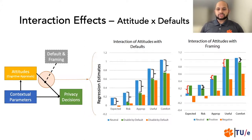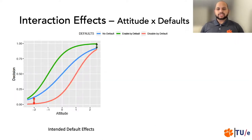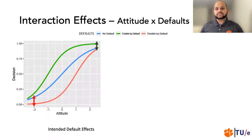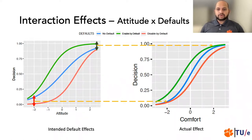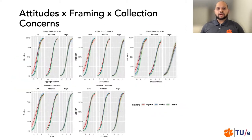This goes on to show that in certain cases, the framing can even reverse the effect of attitudes. Looking at logistic regression plots: ideally, for an attitude, what should happen is that the disabled default should be more effective compared to no default in presence of negative attitudes — that is, the negative default should support people to disable a scenario when their attitude towards that scenario is negative, and vice versa. However, what our data shows is that this is reversed. In case of comfort, the disabled default has almost similar effect as no defaults for participants with negative attitudes towards the scenarios, whereas the enabled default pushes people to make an enable decision even when the attitude is negative. Our study also found a three-way interaction between framing, collection concerns, and attitudes.